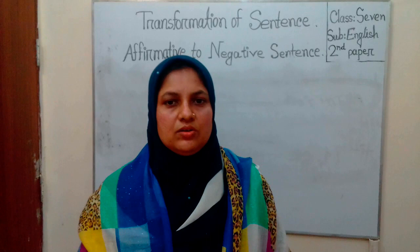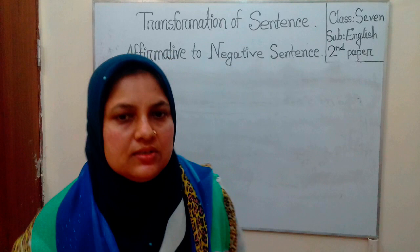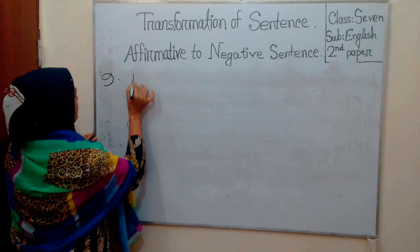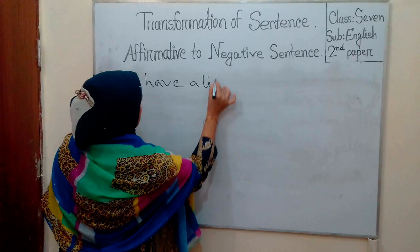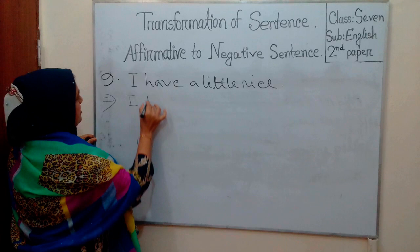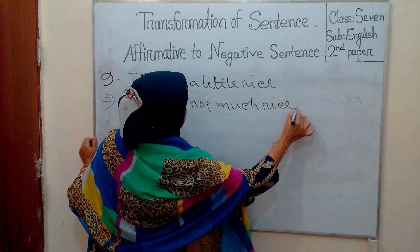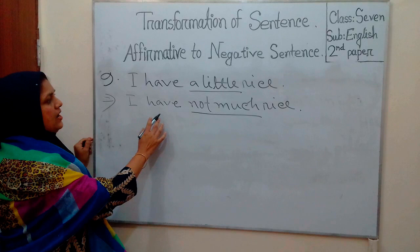Rule 9. If there is 'a little' in the affirmative sentence, it should be changed using 'not much' in the negative sentence. For example: 'I have a little rice.' Negative sentence: 'I have not much rice.' So 'a little' becomes 'not much'.